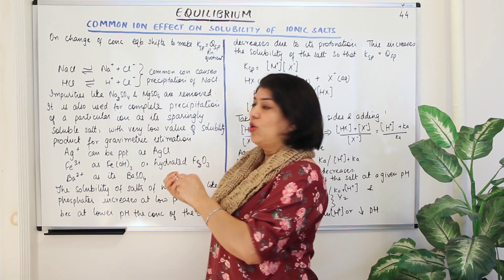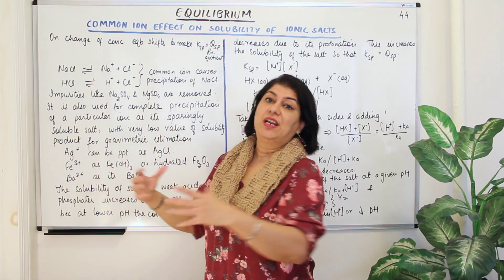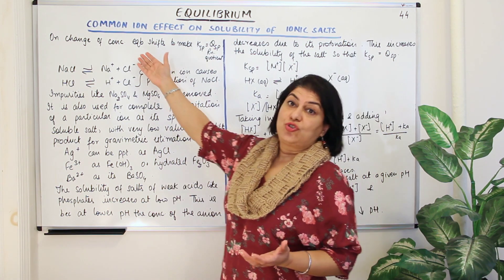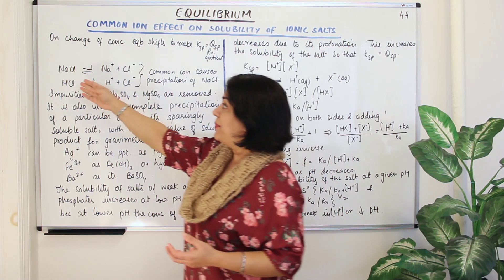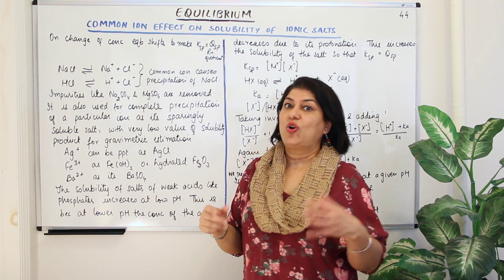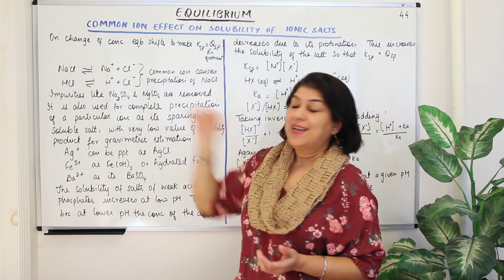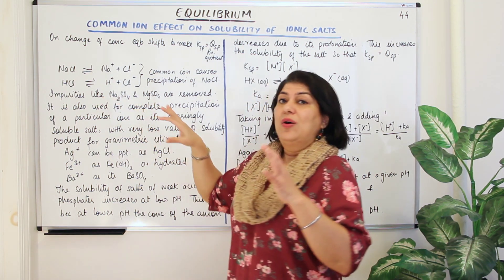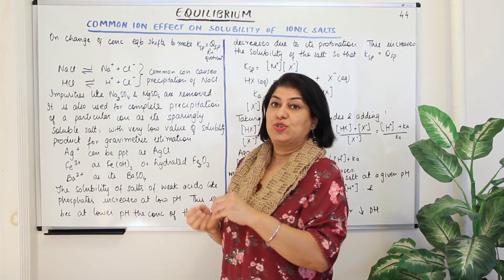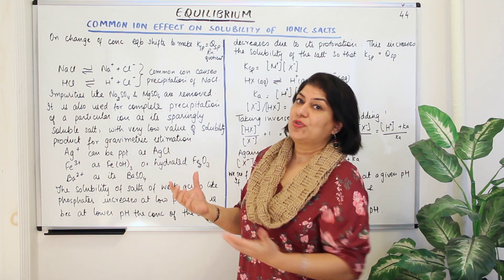Whenever you add a common ion, it affects the equilibrium by shifting it in the direction that will undo its effect. This is noticed in the case of solubility of salts also — when salts are being dissolved, the solubility will become less when you add a substance which has the common ion. The opposite reaction will start taking place, and the salt precipitates out because of the presence of the common ion.